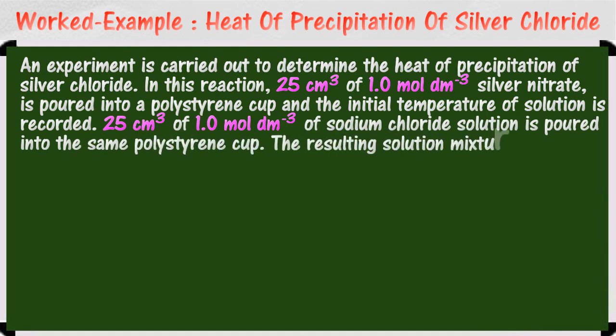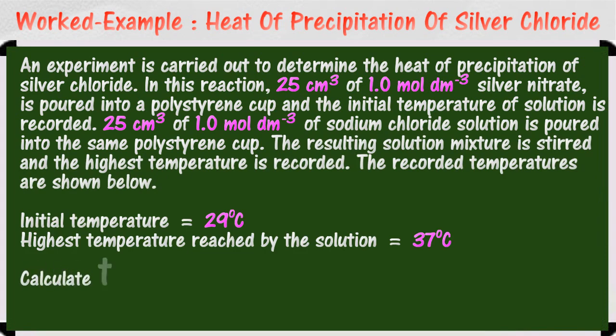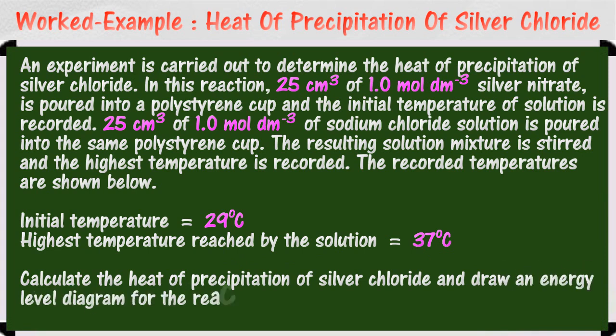25 cm³ of 1.0 molar sodium chloride solution is poured into the same polystyrene cup. The resulting solution mixture is stirred, and the highest temperature is recorded. The recorded temperatures are shown below. Calculate the heat of precipitation of silver chloride and draw an energy level diagram for the reaction in this experiment.